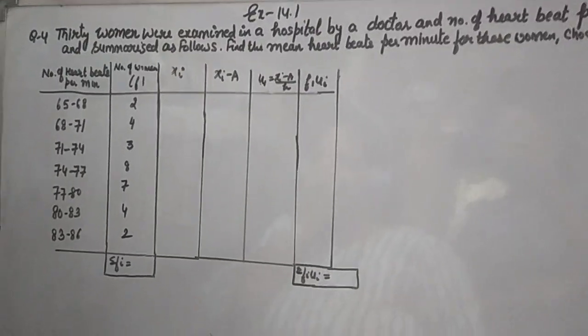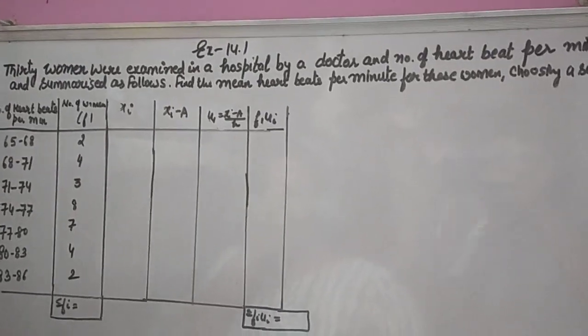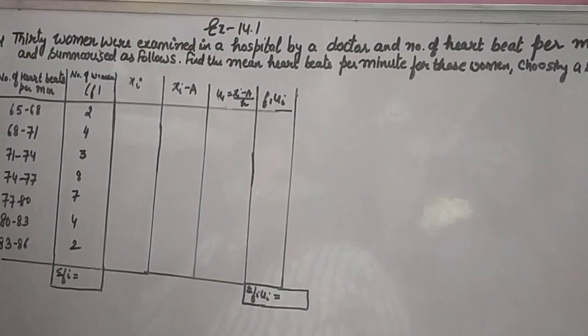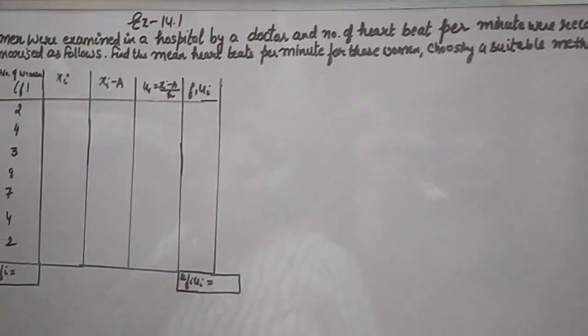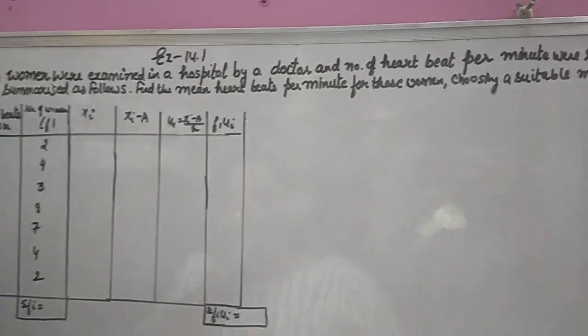Hello students, welcome back to your favorite channel, Mathalpur. Class 10 exercise 14.1, question number 4. Thirty women were examined in a hospital by a doctor and number of heartbeat per minute were recorded and summarized as follows. Find the mean heartbeat per minute for the women choosing a suitable method.